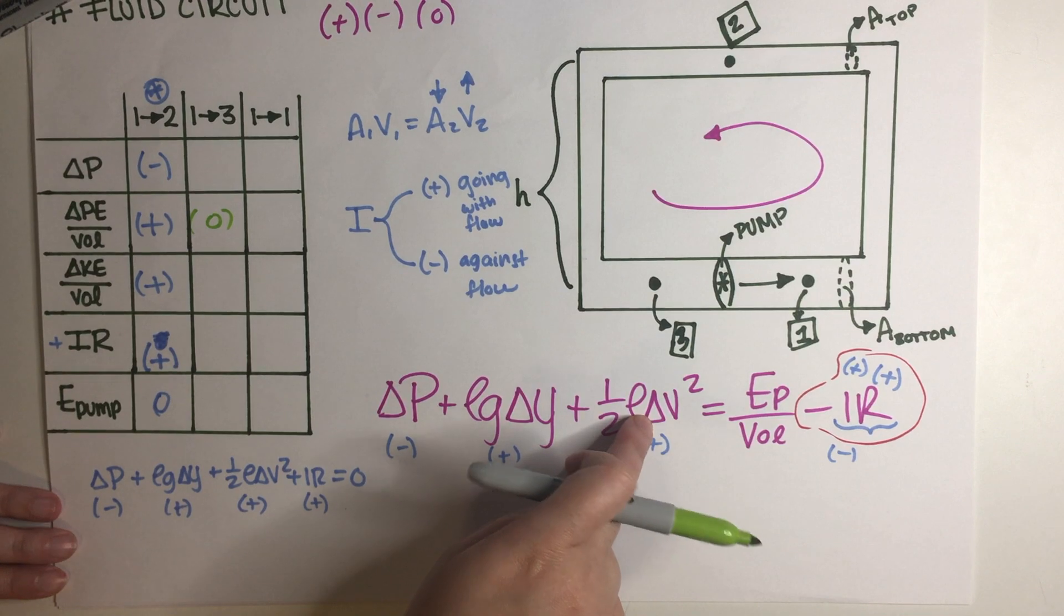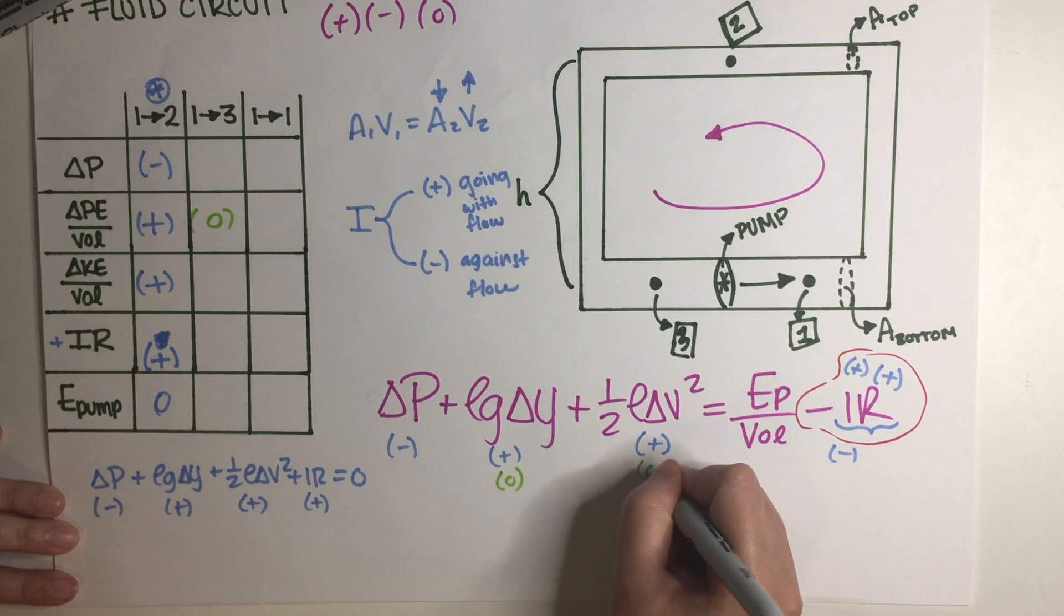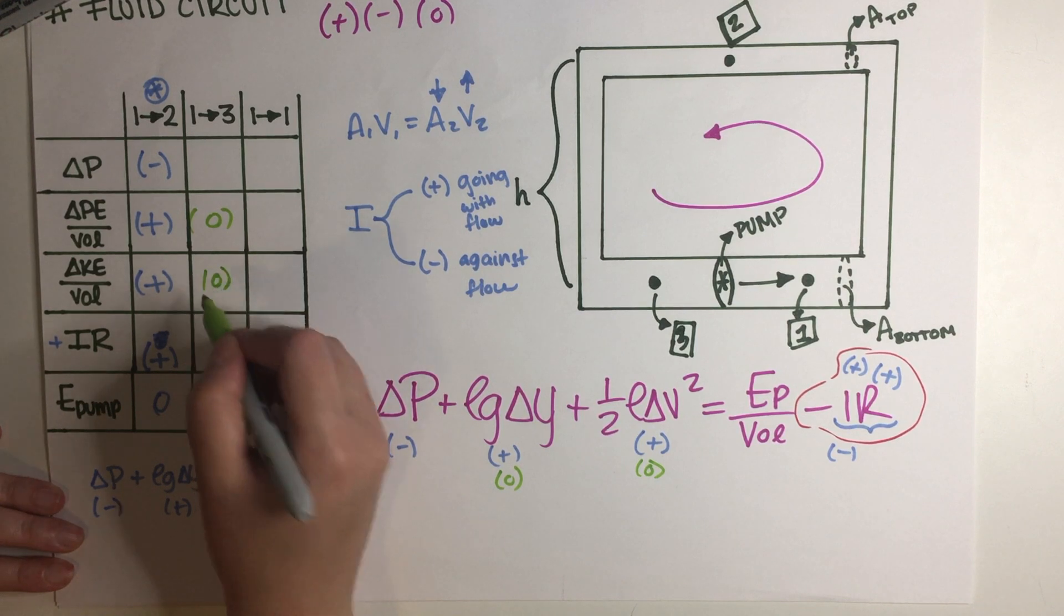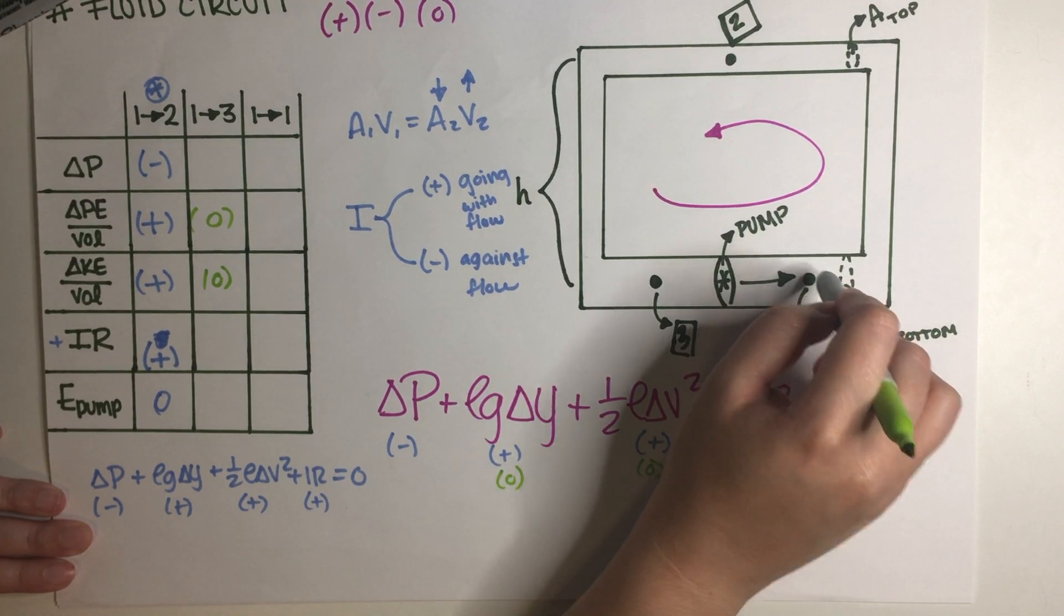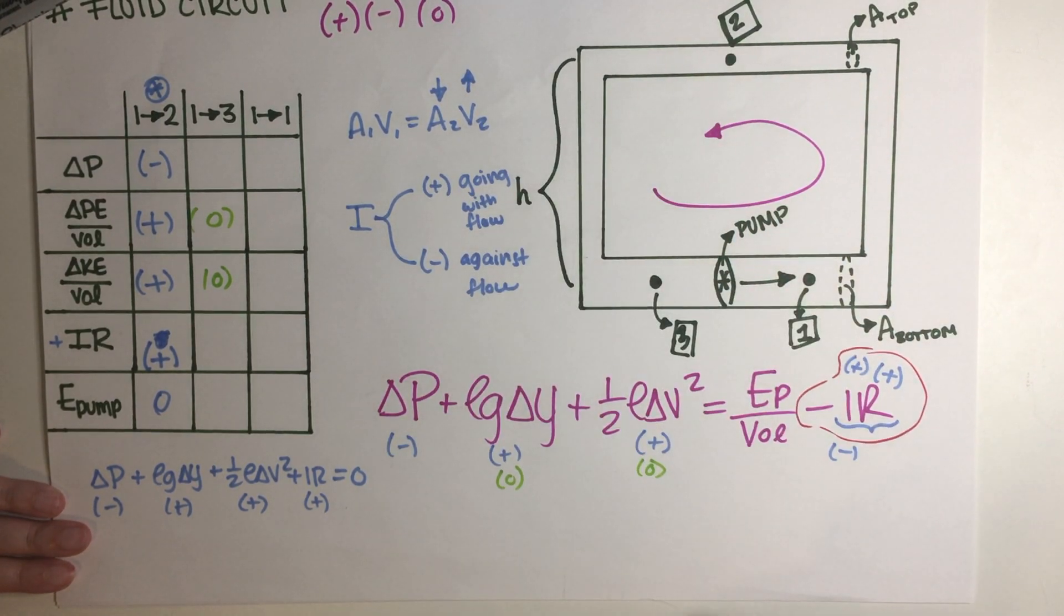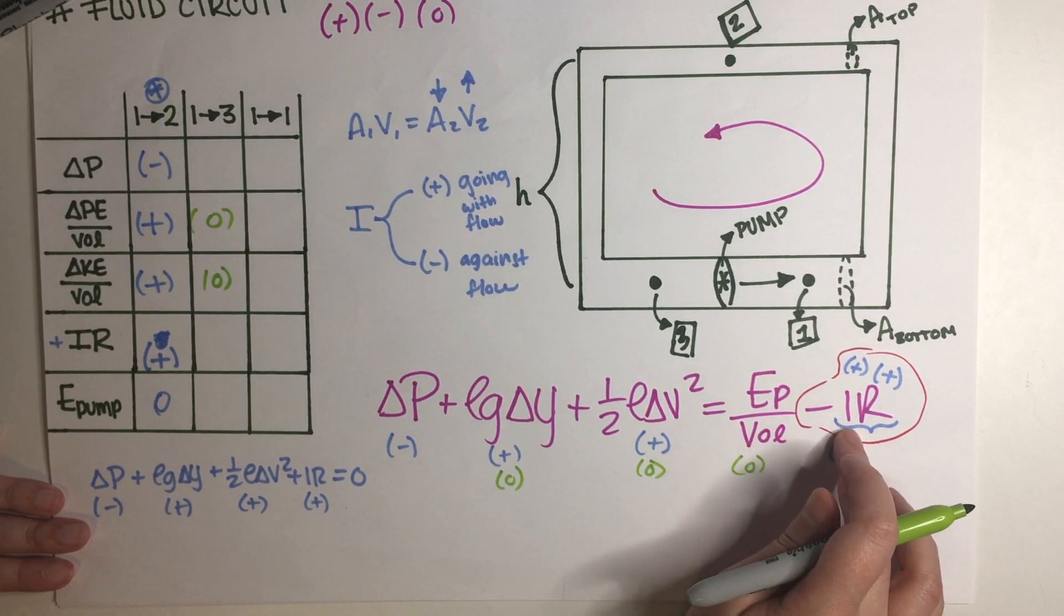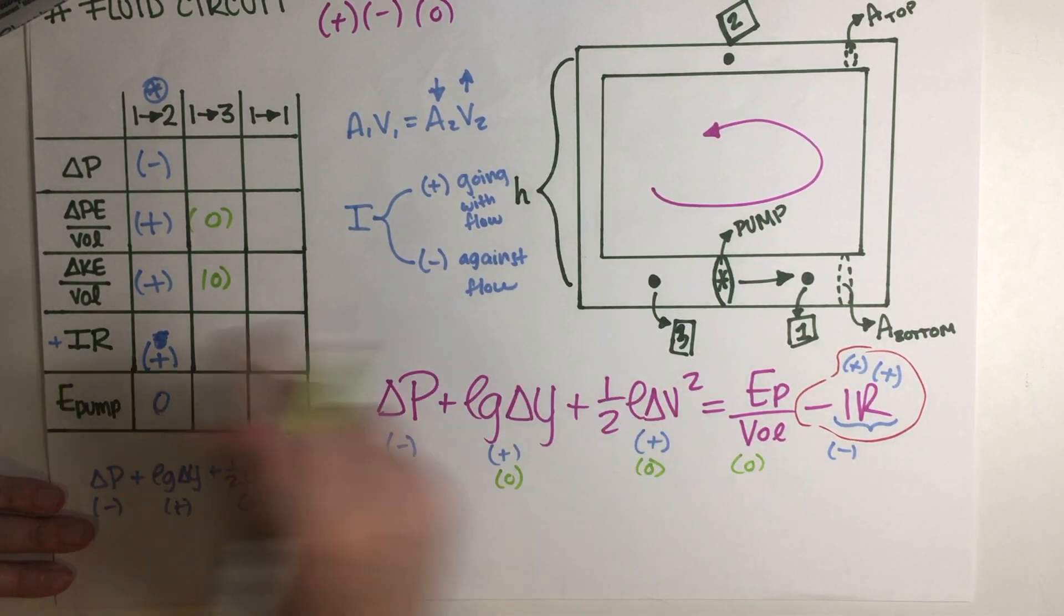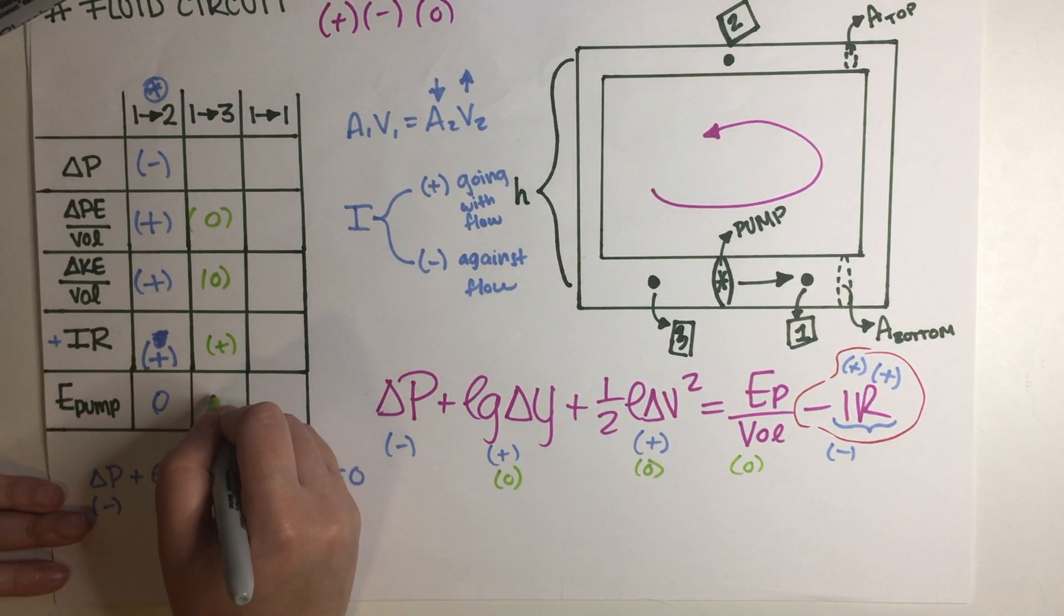We don't have a change in height because we're starting and ending at the same height so that doesn't show up. So this is actually zero. We don't have a change in area because this area stays the same here on the bottom part so this is actually going to be zero as well. We don't have a pump because we are not actually crossing the pump over here, we're not doing that, so this is zero as well.